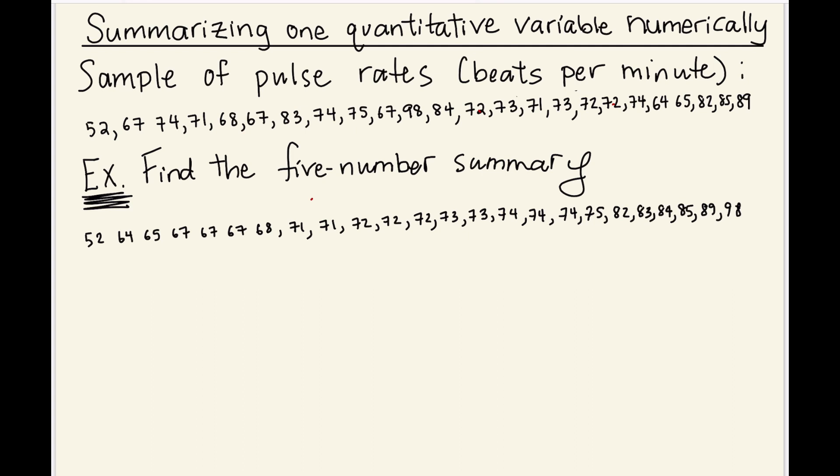So in order to find the five number summary, what I must do is I must find the minimum value. I have to find the first quartile, which we use the notation Q1. And the first quartile divides the data into two sets, the smallest 25% and the largest 75%. I have to find Q2, which is just the median. I have to find Q3. Q3 is the number that divides the set of data into the bottom 75% and the top 25%. And then I have to find the maximum value. And that's going to give me my five number summary.